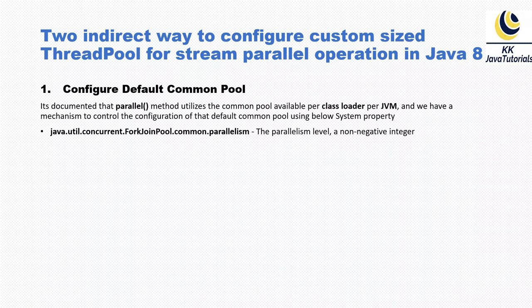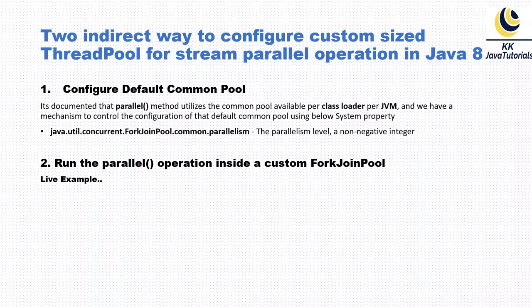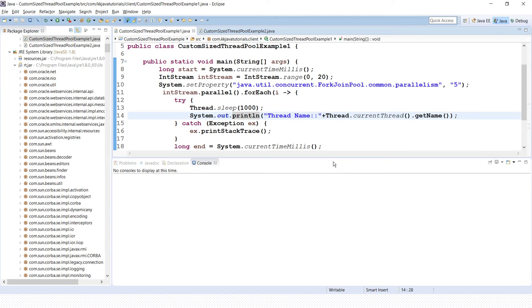The second approach is to run the parallel operation inside a custom ForkJoinPool itself. Let's understand these two approaches through a practical example.